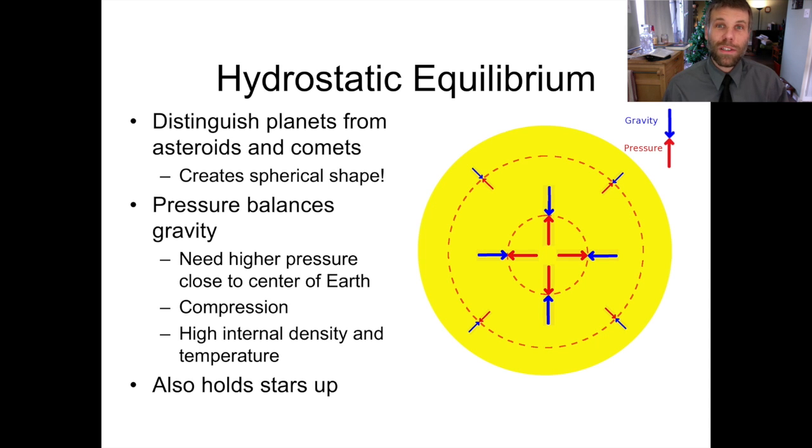The source of the pressure varies depending on what type of object we're talking about. In the case of planets, the compressibility or incompressibility of materials generally makes a pretty big impact. But stars, which are made of gas and are very compressible, also have this same hydrostatic equilibrium.